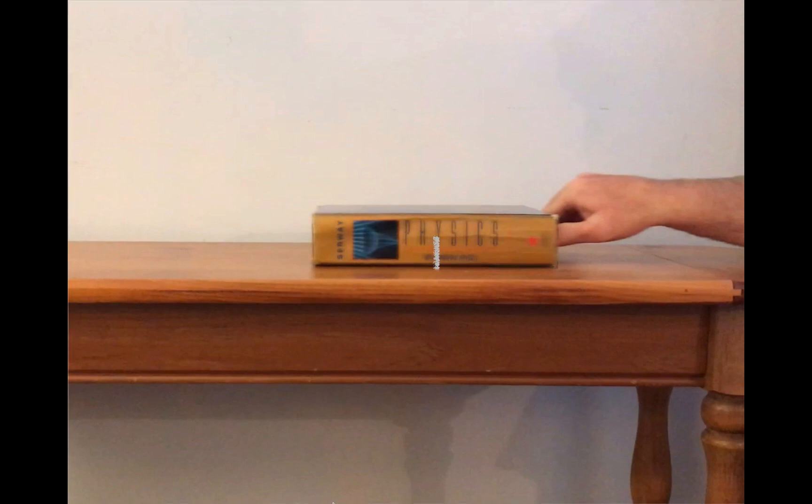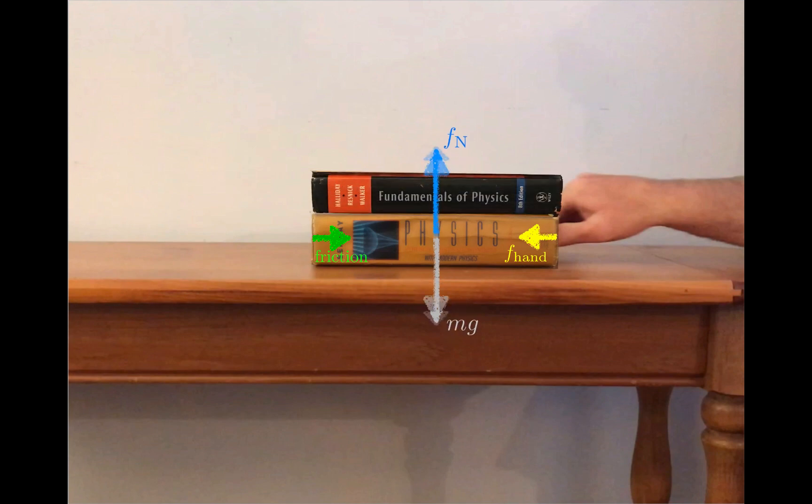As usual, gravity is pulling down on the book, and a normal force is supporting the book. The hand in this clip is pushing on the book, and there's a frictional force resisting that sliding motion. If the book is moving along at constant velocity, and it appears to be doing so in this clip, then there is no acceleration, so the frictional force and the force of the hand should be equal. If a second book is piled on top of the first one, the gravitational force increases, and so does the normal force.